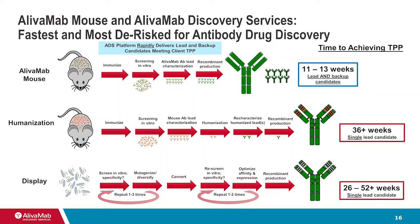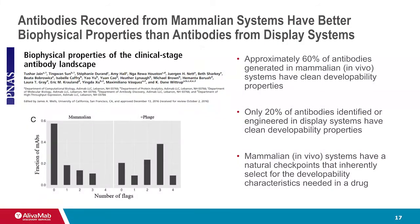Together, Ablexus and Alevimab Discovery Services offer the best solution for antibody drug discovery, putting partners' projects on the fastest and most efficient path through discovery, development, and into the clinic. We are the fastest to the value inflection point of delivering panels of confirmed, functionally active, truly molecularly diverse lead candidate antibodies. We eliminate the cost and risk of in vivo display platforms, antibody humanization, and other transgenic platforms. Antibodies identified in Alevimab Mouse have better biophysical properties than those from display technologies — according to a publication from Jane et al., antibodies from in vivo systems are three times more likely to have clean developability profiles than those from display technologies.